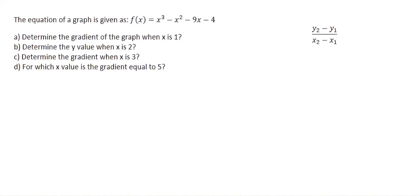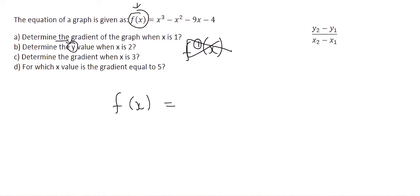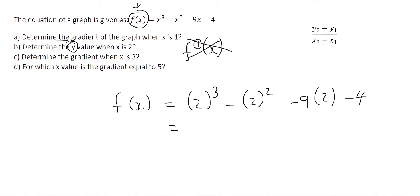Question B says: determine the y value when x is 2. I've purposefully done this because here they're not talking about the gradient — they're just talking about the y value. Remember, this is the y value. This part over here, where I've got this little apostrophe, that is not the y value; that stands for gradient. So because they just want the y value this time, we will plug x as 2 into the original equation and not the gradient equation, which gives us negative 18. So the graph has a y value of minus 18 when x is 2. That question has nothing to do with gradient.